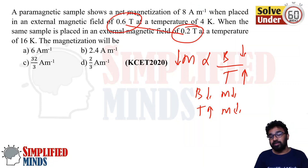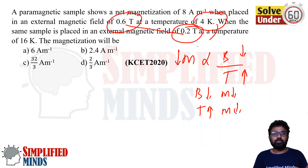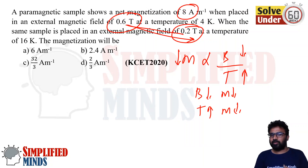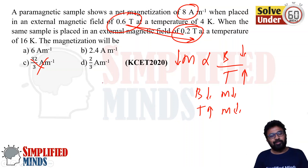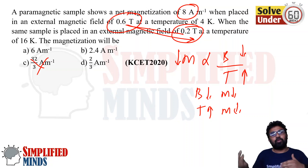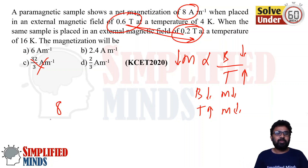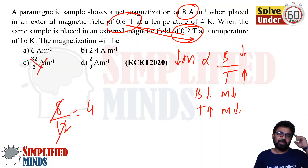B has decreased to one third, and T has increased to four times. Directly: if B is one third and T is four times, then it's a 12 times decrease overall. So the magnetization becomes 8 divided by 12, which directly gives 2 by 3. That is the answer.